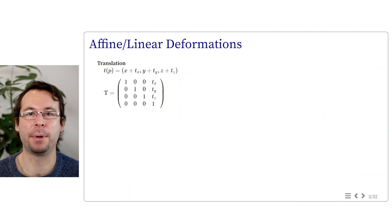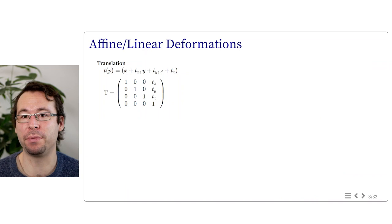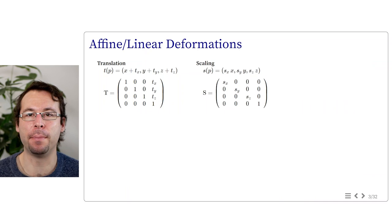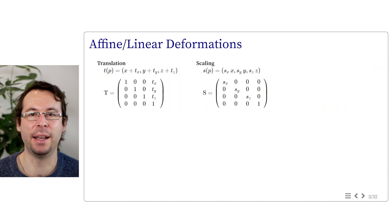We can categorize affine transformations. First, translation, represented by a vector TX, TY, TZ — a simple but non-linear transformation, directly readable from the 4×4 matrix. Then scaling, fully described by three parameters SX, SY, SZ, with a diagonal matrix. Quite often we consider SX equals SY equals SZ, giving homogeneous scaling with a single parameter S.